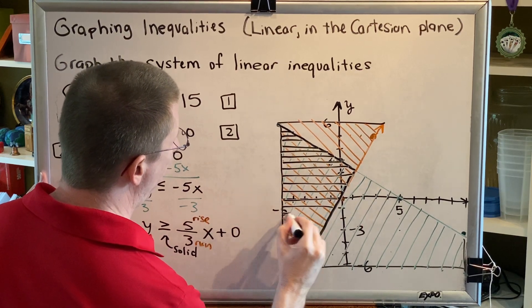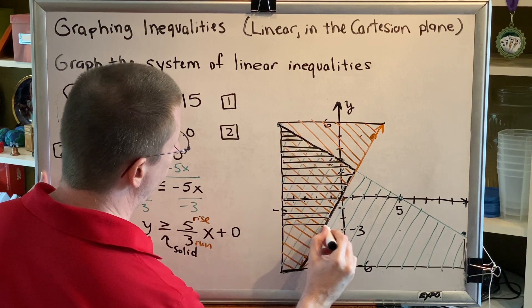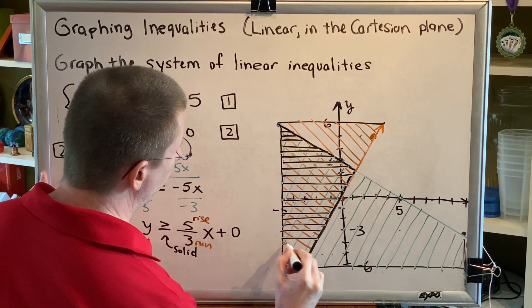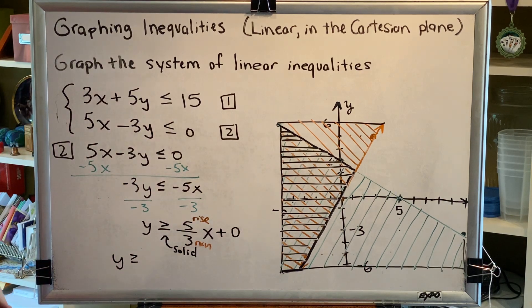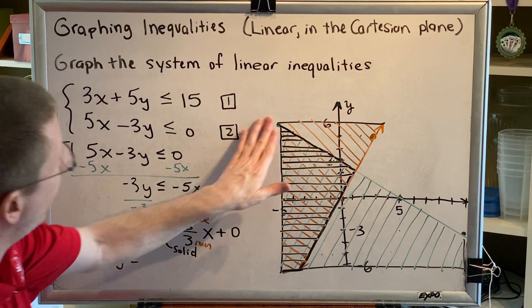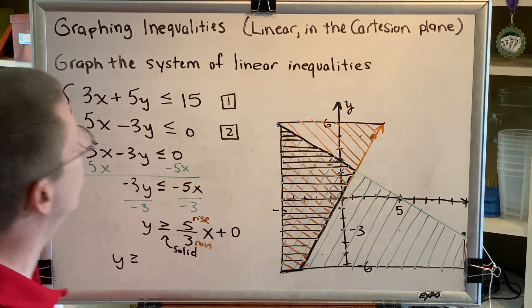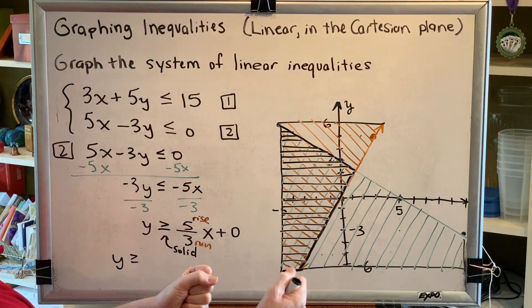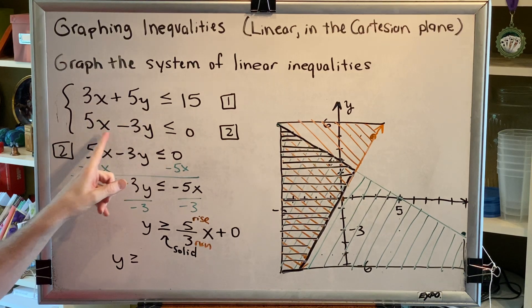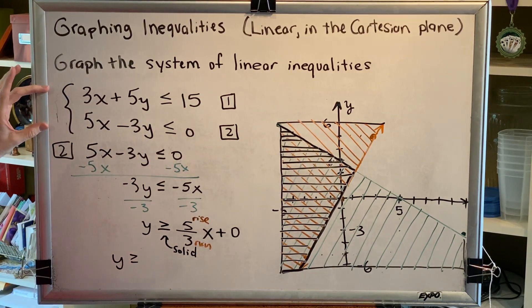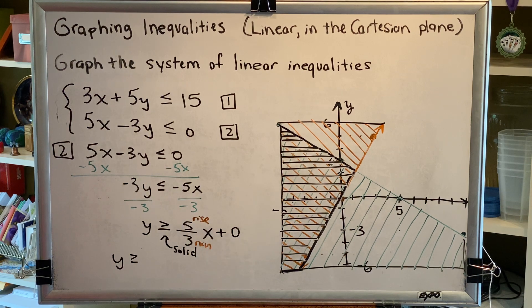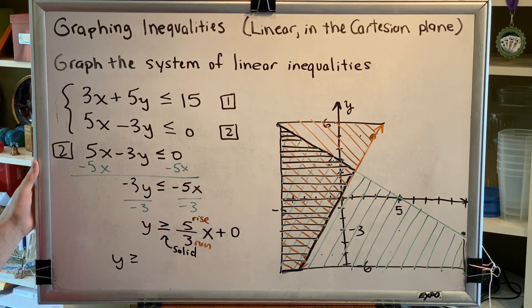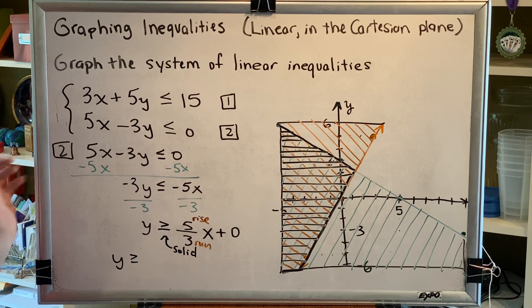Every ordered pair, every point inside this black shaded region with coordinates x and y, satisfies both of these inequality statements. I can pick any point anywhere in this black shaded region, get the x and y of that point, and replace the x's and y's in both inequality statements, and I would get a true statement. This is now a solved system of linear inequalities.